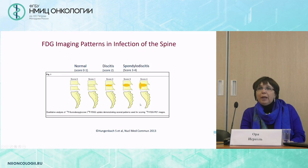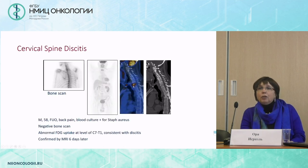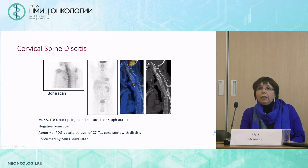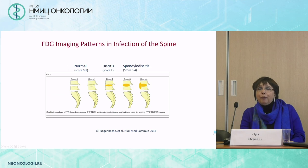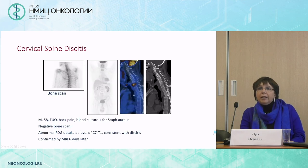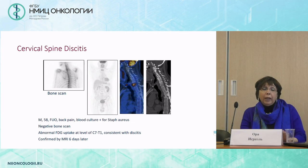When looking at FDG imaging patterns for spinal infection, certain patterns — three and four — are more consistent with the presence of spondylodiscitis. One of our patients had septicemia, back pain, a negative bone scan, and an abnormal FDG study at the lower cervical spine corresponding to pattern number four. Our diagnosis of spondylodiscitis was confirmed by MRI. Today, when we make the diagnosis, the patient is no longer sent for MRI as well — we have gained our credibility.